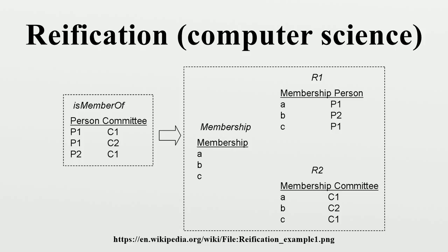Data Reification versus Data Refinement: Data reification involves finding a more concrete representation of the abstract data types used in a formal specification. Data reification is the terminology of the Vienna Development Method that most other people would call data refinement. An example is taking a step towards an implementation by replacing a data representation without a counterpart in the intended implementation, such as sets, by one that does have a counterpart — or at least one closer to having a counterpart — such as sequences. The VDM community prefers the word reification over refinement, as the process has more to do with concretizing an idea than with refining it.